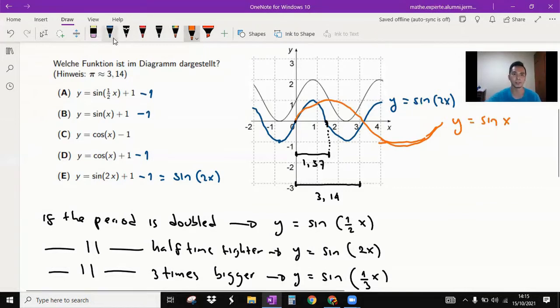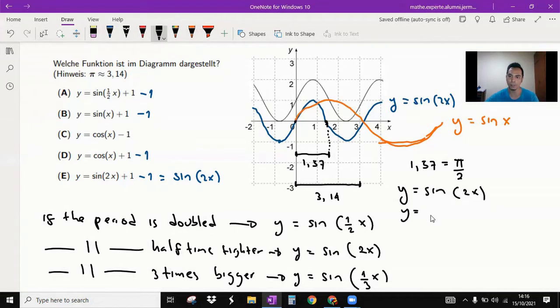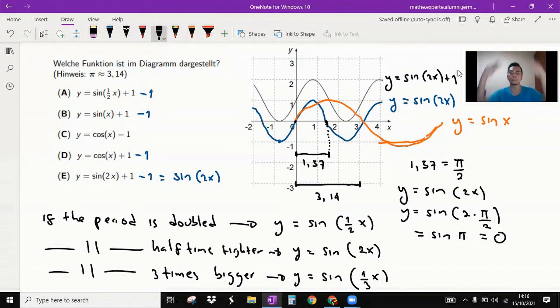Why is it 2x? You can check. If you put this point, this x point 1.57, it's equal to π over 2. Now you put this in this function and the function is going to be sine 2 times π over 2, and it's equal to sine π, and it's zero. So we have proven that this point at x equals 1.57 is gonna be zero. And it means this one is sine 2x plus 1. You bring it one step up back again.